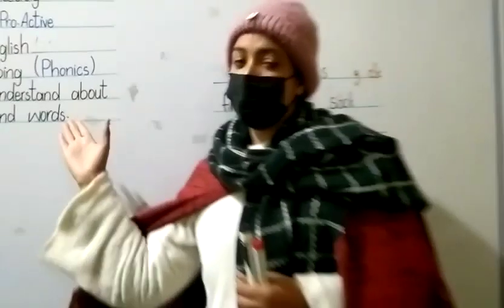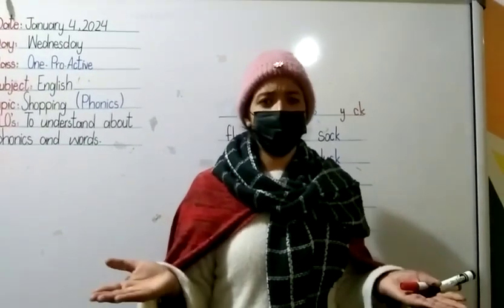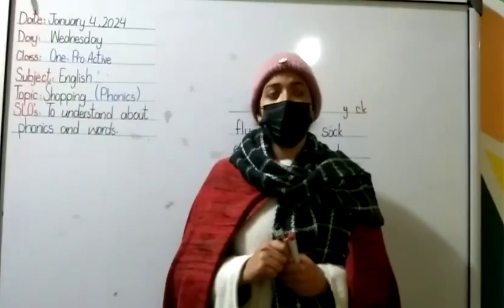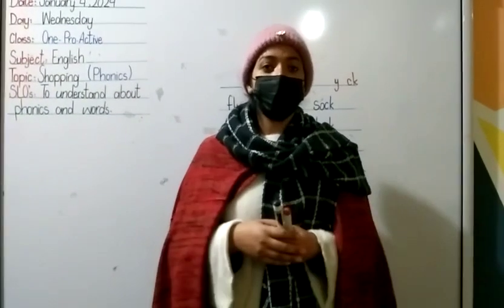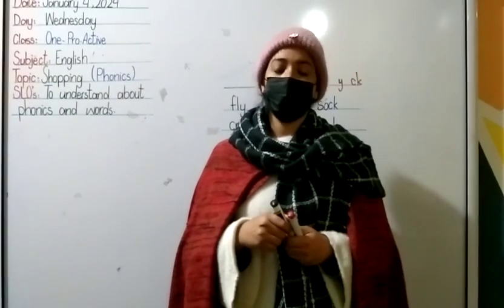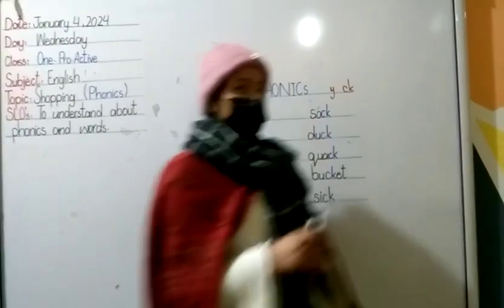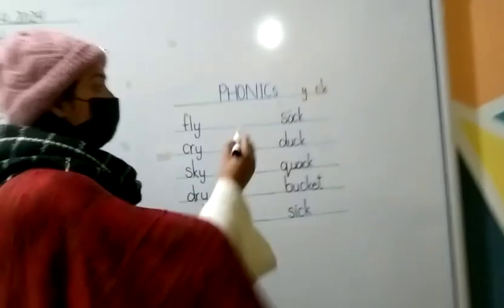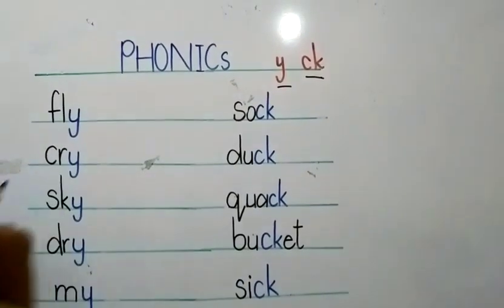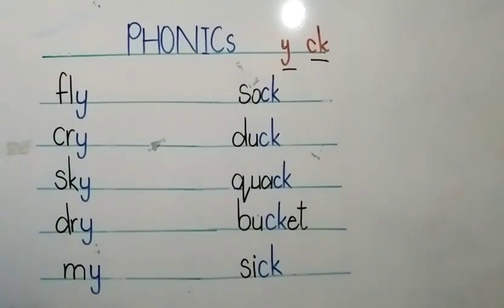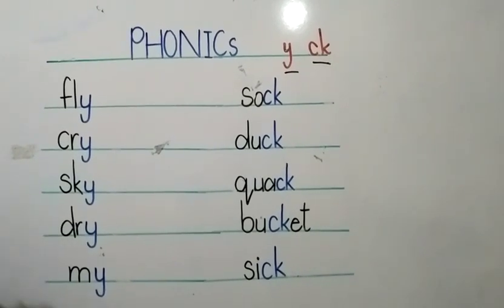Students will be able to understand these words and sounds. What is phonics? Phonics is, you can say, a sound. There are 44 sounds in English, but at your stage I will do only this word. We are going to talk about the Y and CK. The sound of Y is /i/, and the sound of CK is /k/.